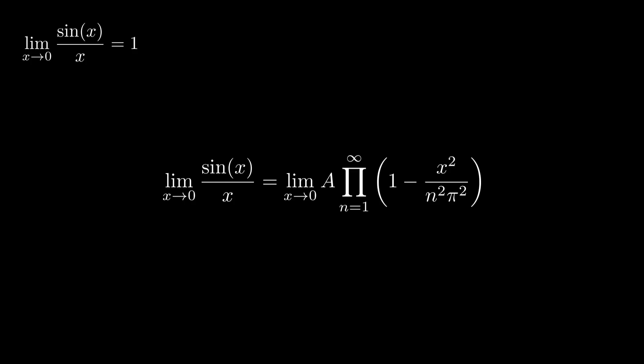On the right side, as x approaches 0, each term 1 minus x squared over n squared pi squared approaches 1 minus 0 squared over n squared pi squared, which simplifies to 1. Therefore, the infinite product itself approaches 1. This tells us that our unknown constant, a, is simply 1.